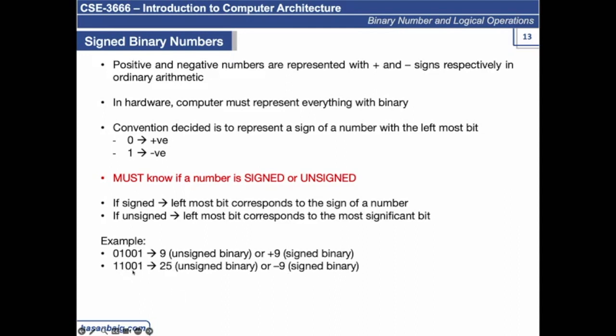Similarly, 11001 corresponds to actual 25. So it is unsigned binary in 25 unsigned. But when you have to represent, if it is specified that it's a signed number, then the first four digits represent 9 and the leftmost one represents the sign negative. So it's minus 9.